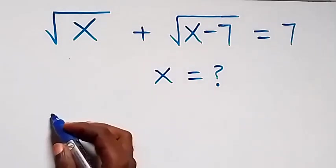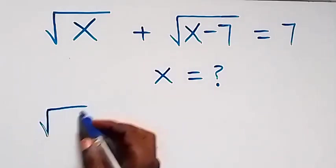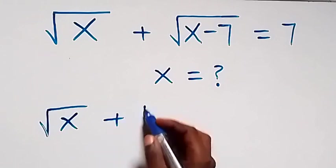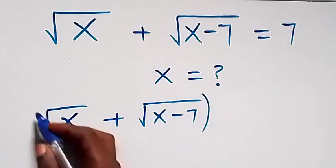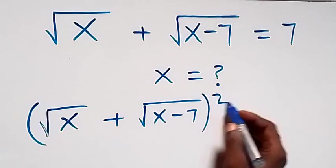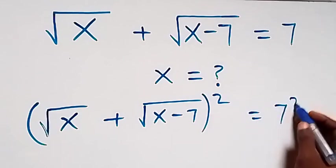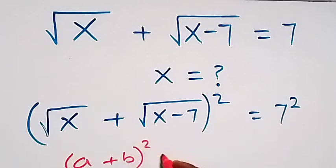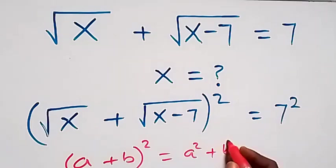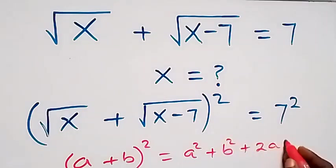From here, the left hand side is root x plus root x minus 7, and we square both sides, so the right hand side equals 7 squared. Following the expansion when we have a plus b, the whole thing squared.